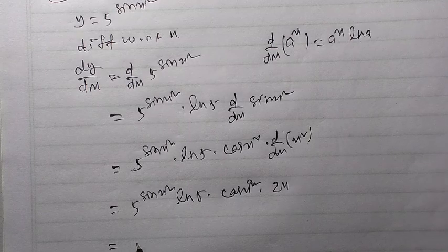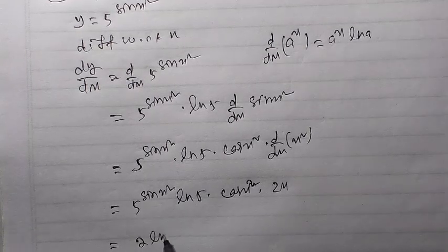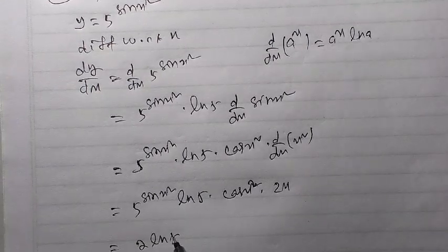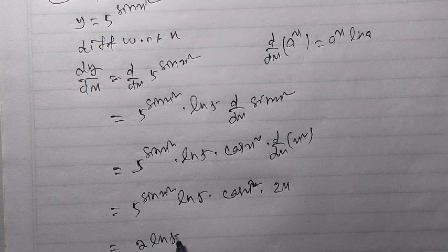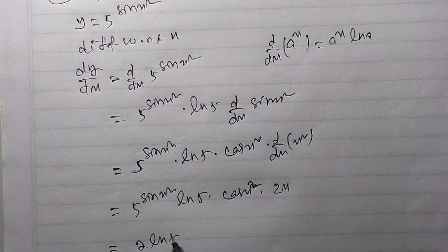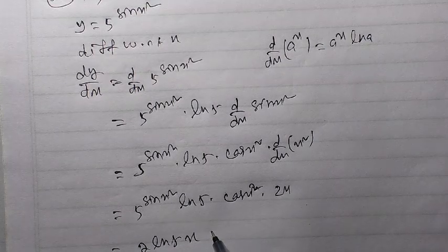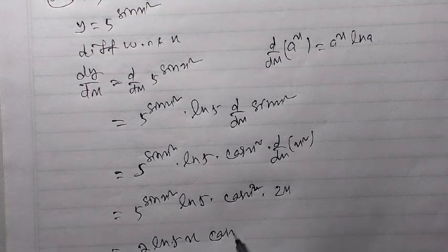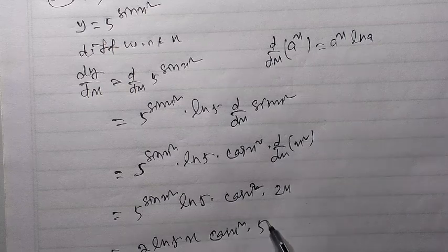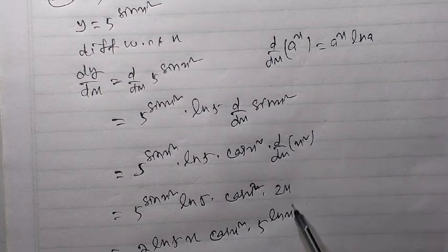Is equal to 2 ln 5, 2x ln 5. Okay, 2 ln 5 x, cos x square, 5 to the power sin x square. This is your result.